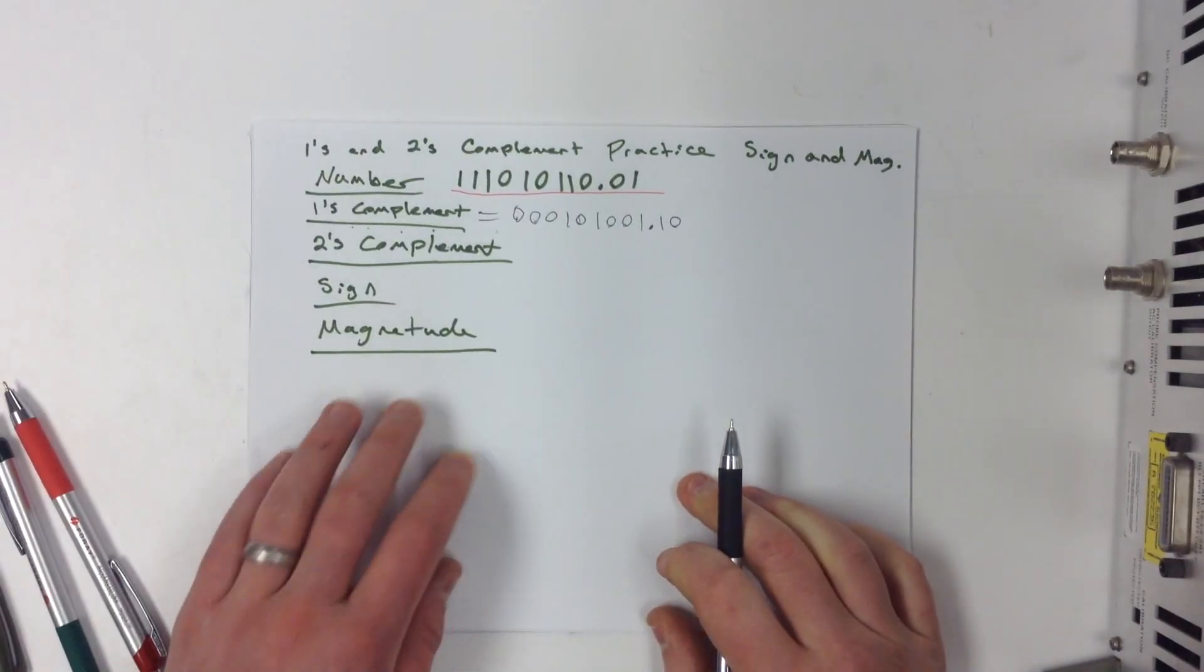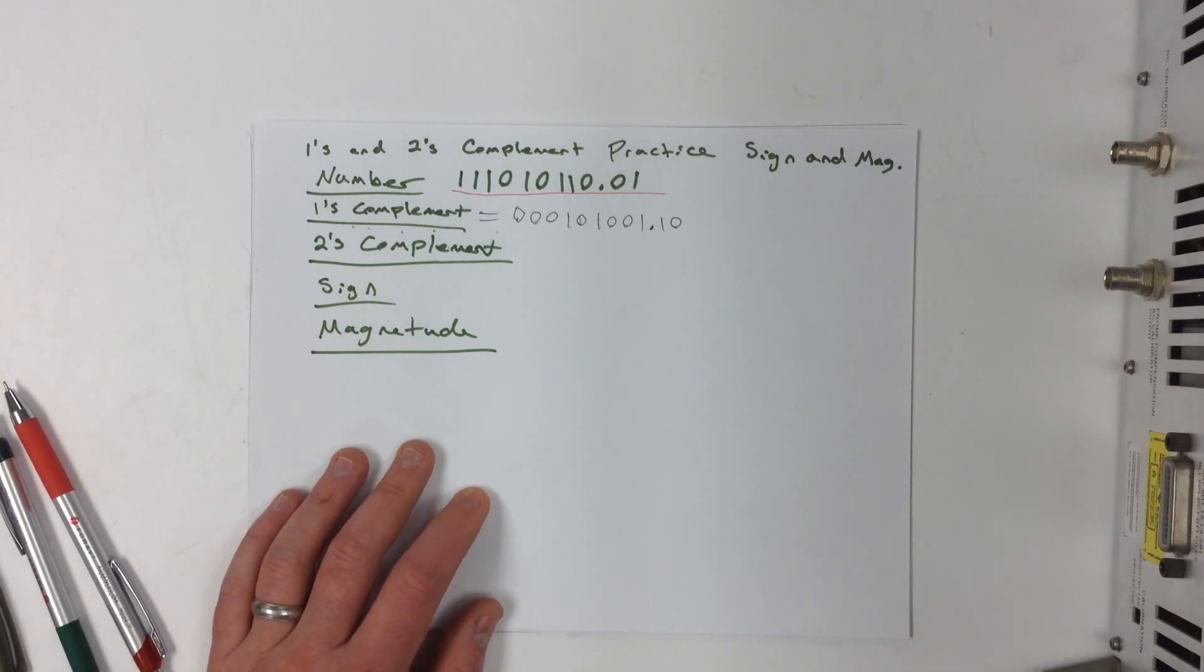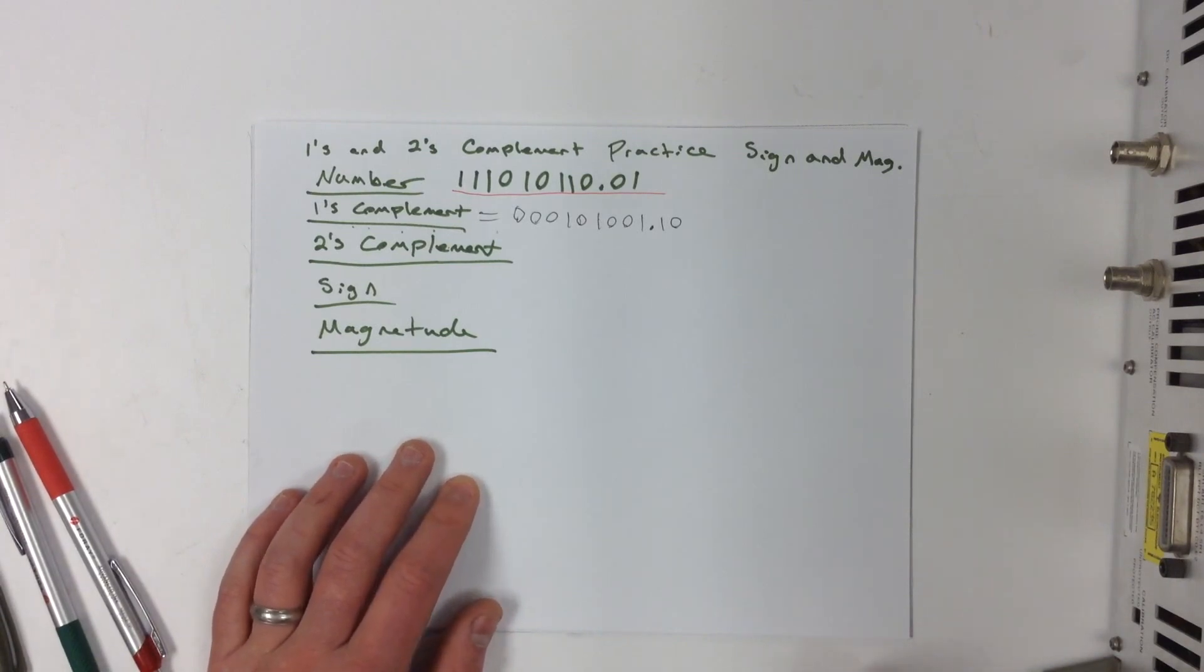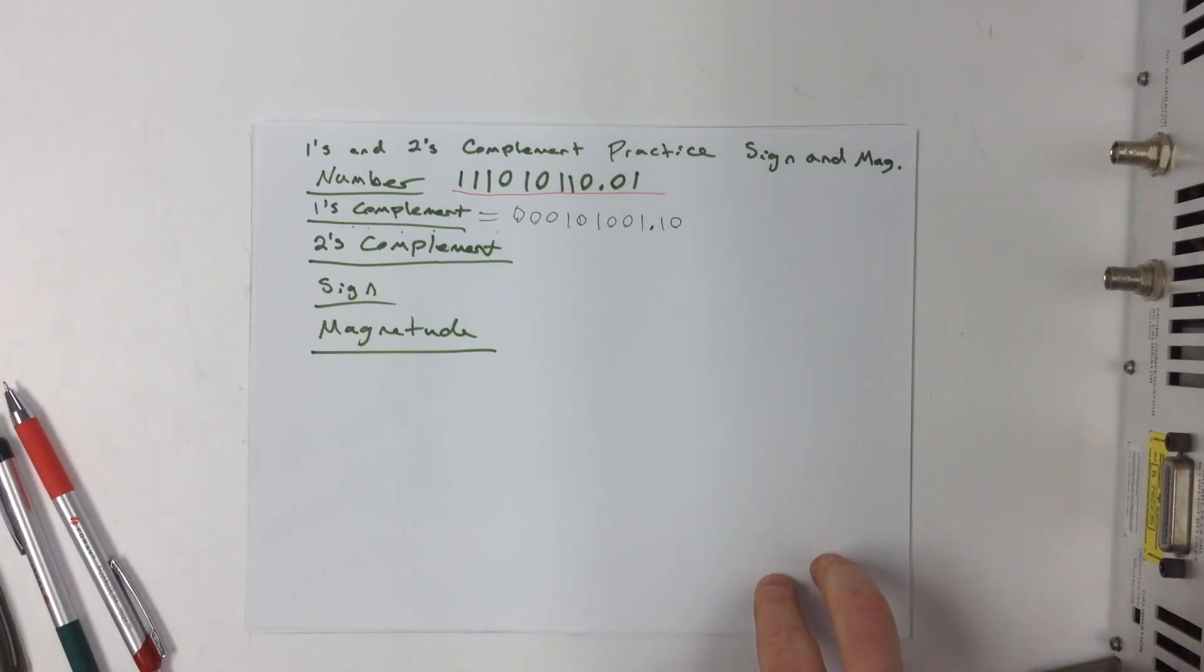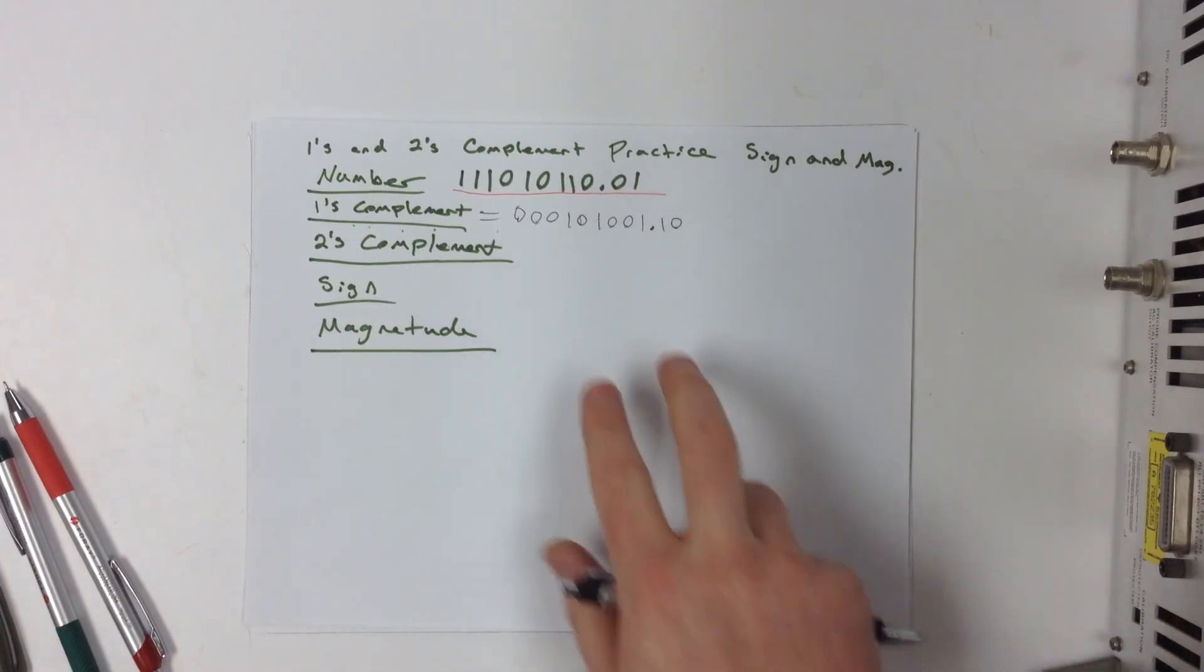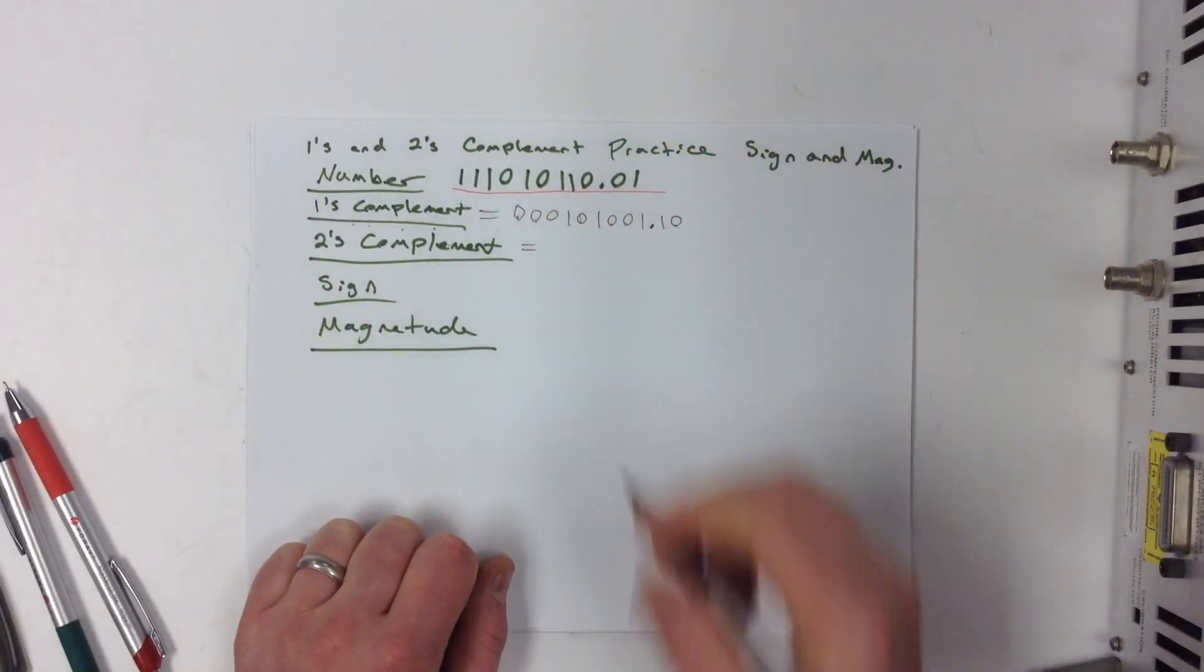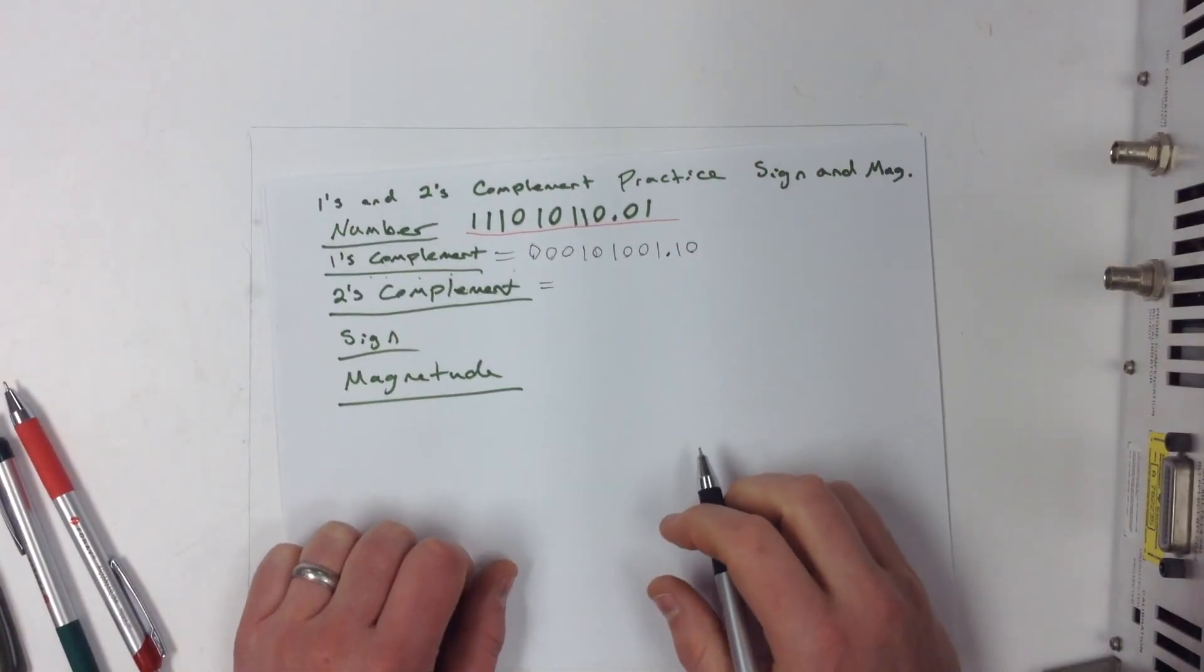Now, that's how you find a 1's complement of this number. The only problem with 1's complement, you can't express quite as many bits as you can with a 2's complement, because a 1's complement is kind of a funny number system. There's a positive and a negative 0. So in computing, especially in microprocessors, we like to use 2's complement.